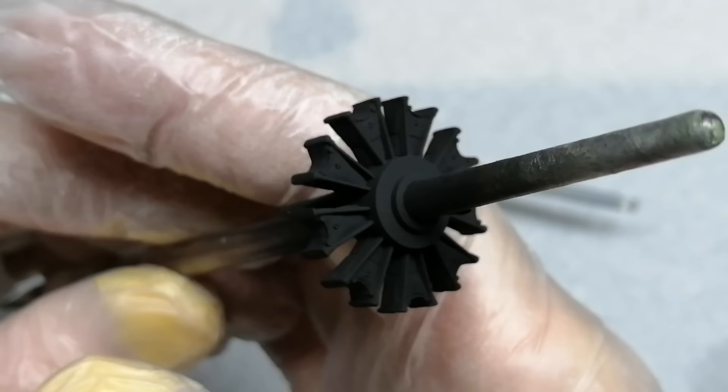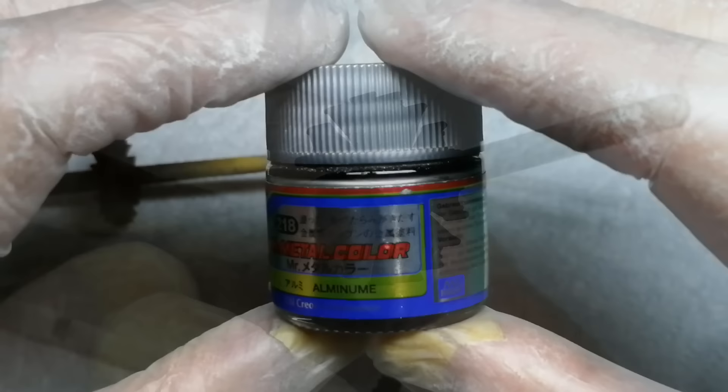The engine next is a bit basic but I'll come to that later. So after applying the black I'm going to dry brush with Mr. Metal colours aluminium, quite heavily as the cylinder blocks should be silver.